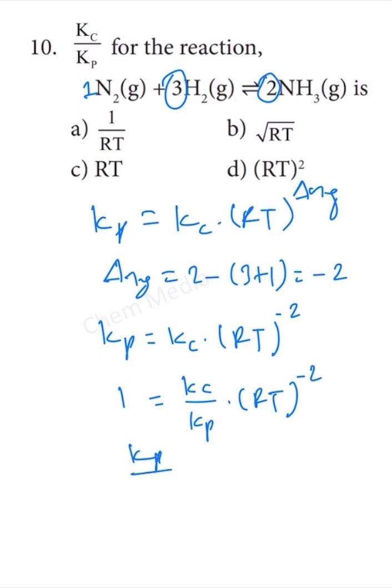Therefore, Kp divided by Kc equals 1 over RT squared.